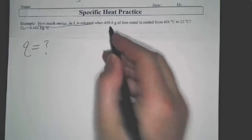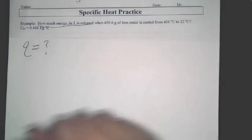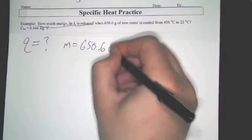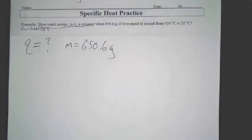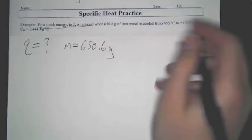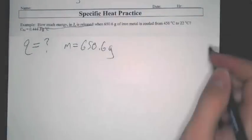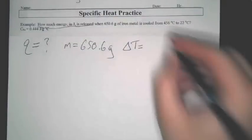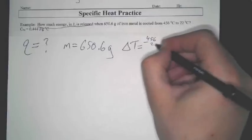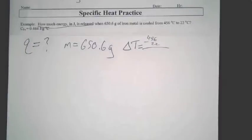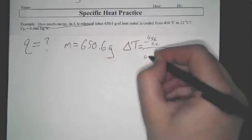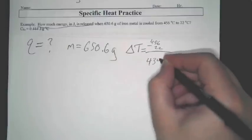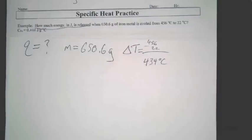Then it says when 650.6 grams of iron. So you're like boom, we got our mass. There's our mass. You know that because it says that. Then it says it's cooled from 456 to 22 degrees Celsius. So our delta T, it's going to be 456 minus 22. What's that give us? Seriously, what does it give us? Correct. So that's our delta T. It's the change.